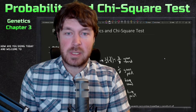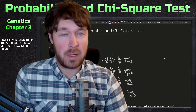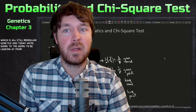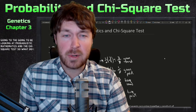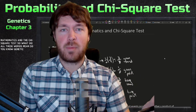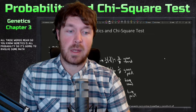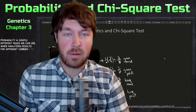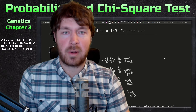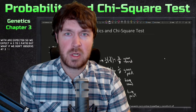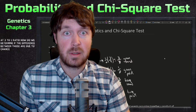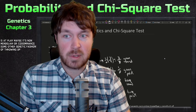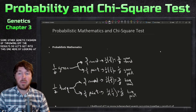Welcome to today's video. We're finishing up chapter 3, which is all about Mendelian genetics. Today we're looking at probabilistic mathematics and the chi-square test. Genetics involves probability and math — there are different equations and rules for analyzing results and combinations. The key question is: how do our results compare with what we expect? For example, we expect a three-to-one ratio, but what if we don't observe that? We need to determine if the difference is due to chance or something else, like non-Mendelian inheritance or codominance.